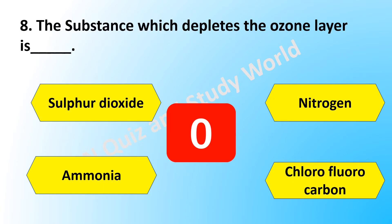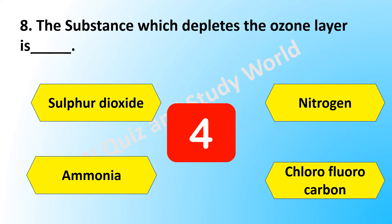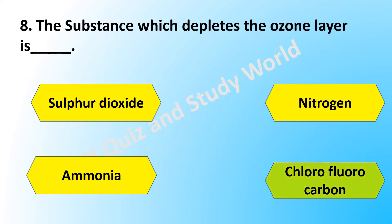The substance which depletes the ozone layer is — is it sulfur dioxide, nitrogen, ammonia, or chlorofluorocarbon? The answer is chlorofluorocarbon.